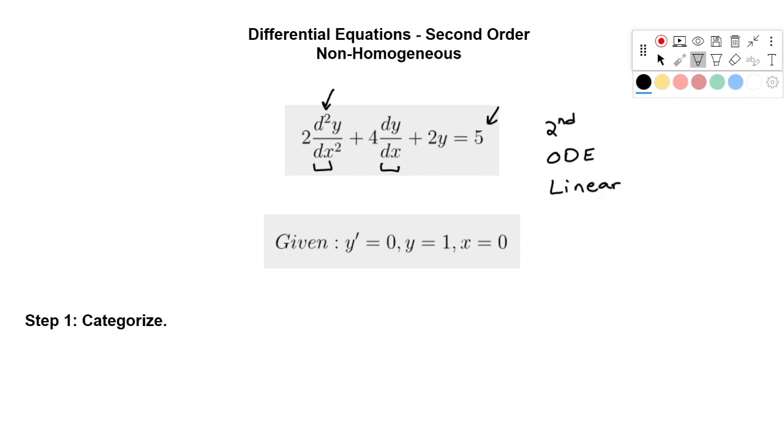Our forcing function is over here on the right, we could see that it is non-zero, that is what makes this non-homogeneous. And our coefficients in front of our y-value and all of its derivatives, these are all scalars, so we have constant coefficients.